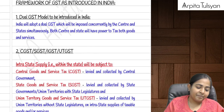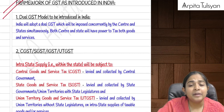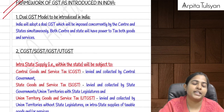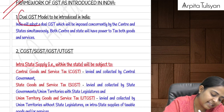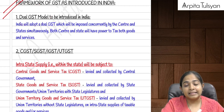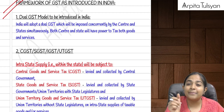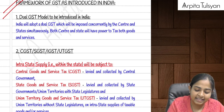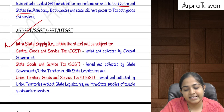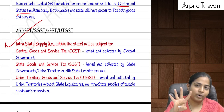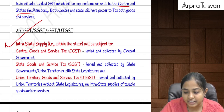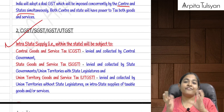GST follows a dual GST model, meaning GST will be levied simultaneously by two persons — one is by the center and the other by the states. Under GST there are four types of taxes: CGST, SGST or UTGST, and IGST.